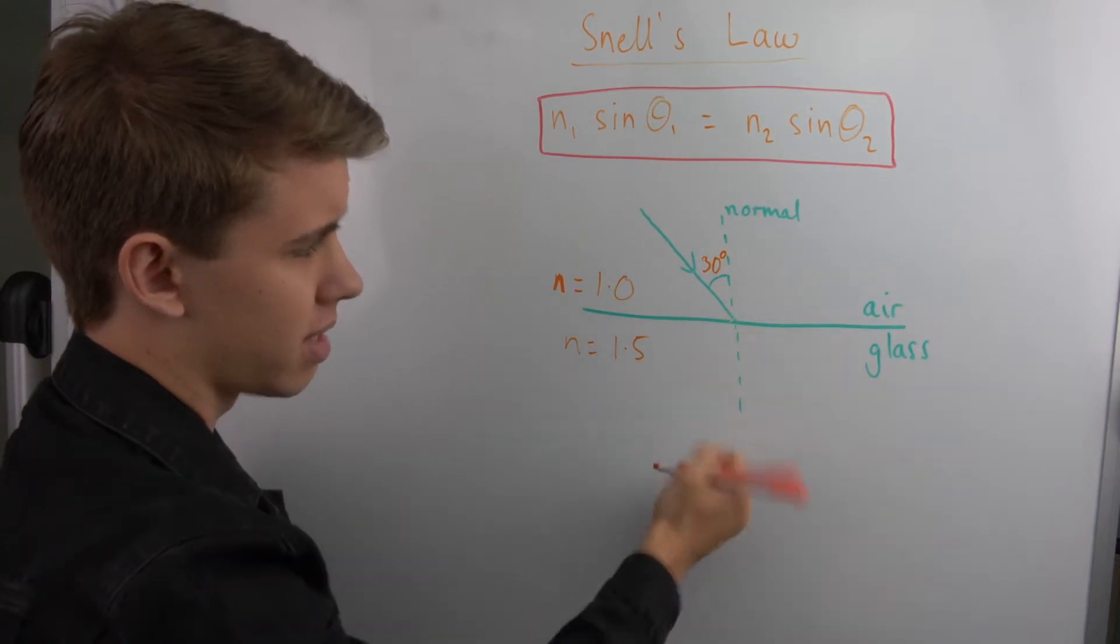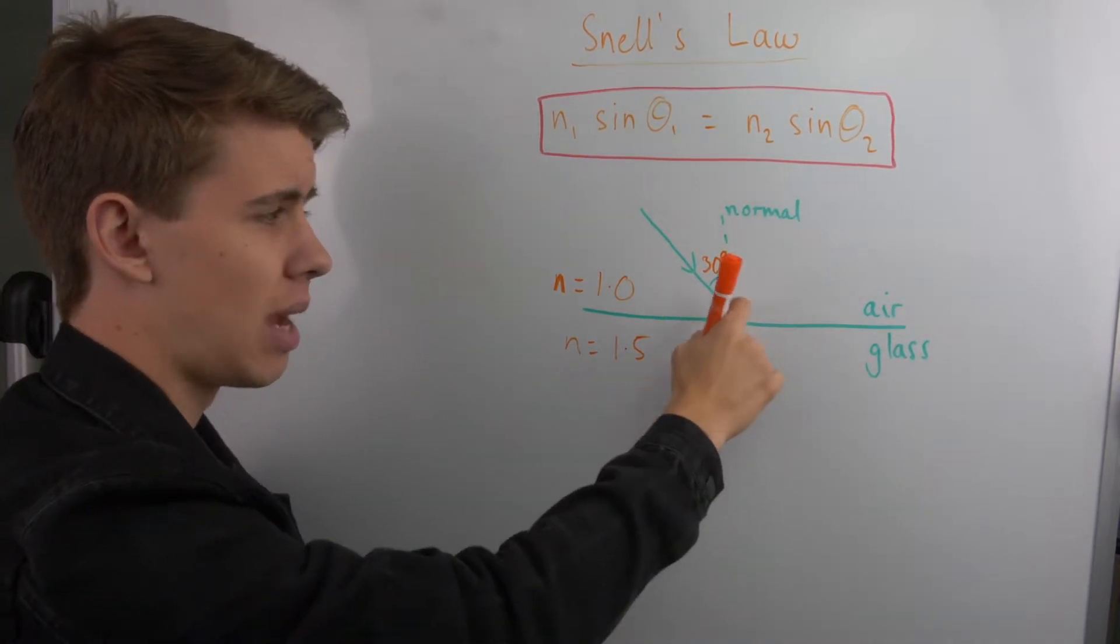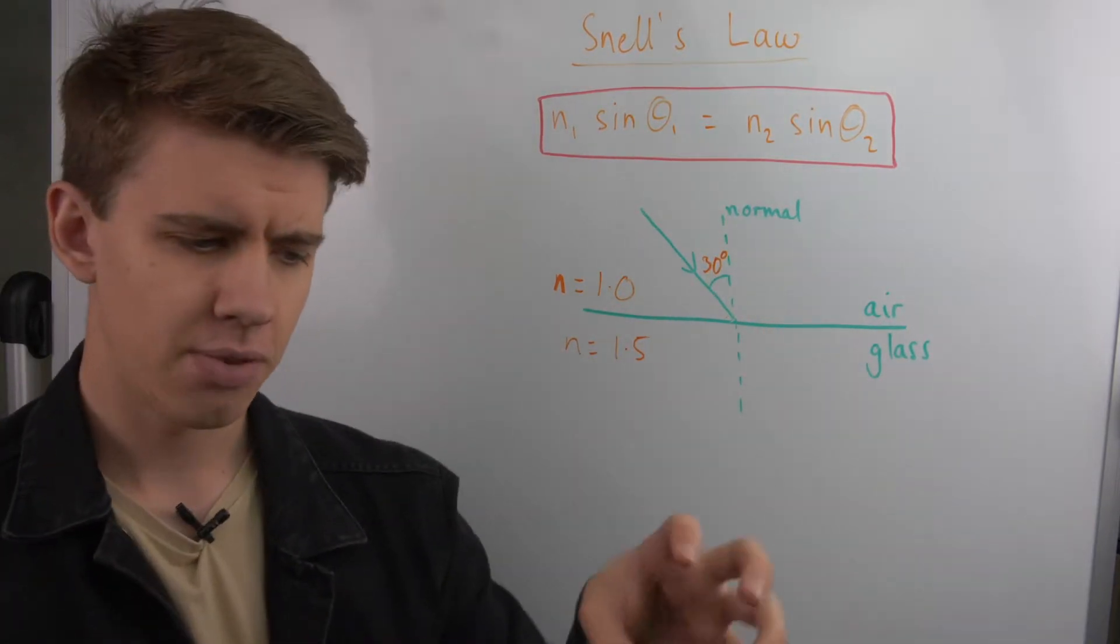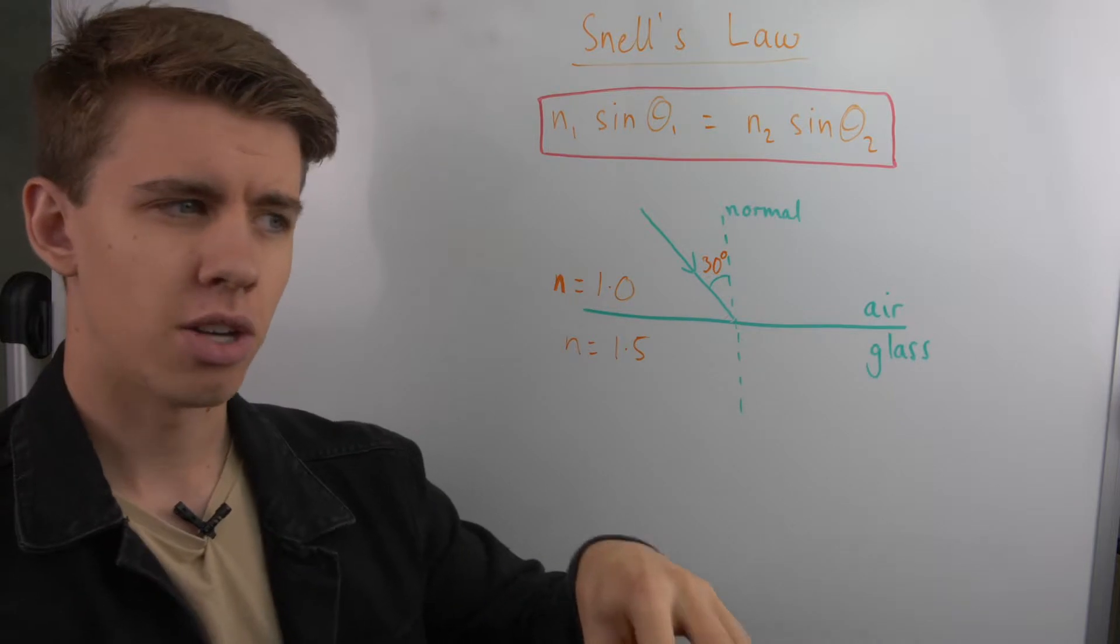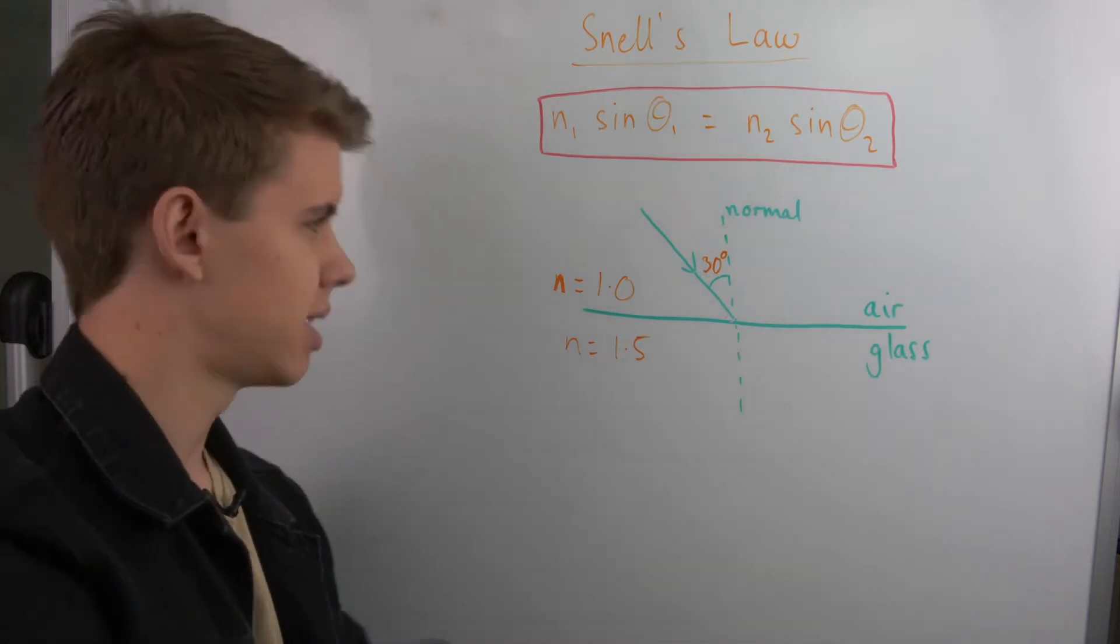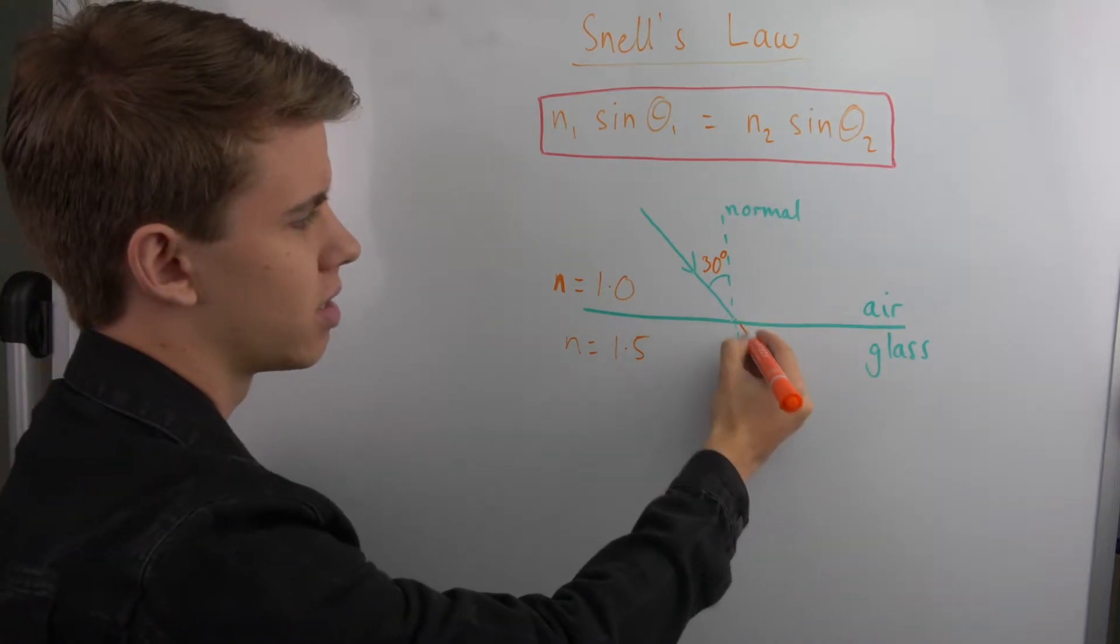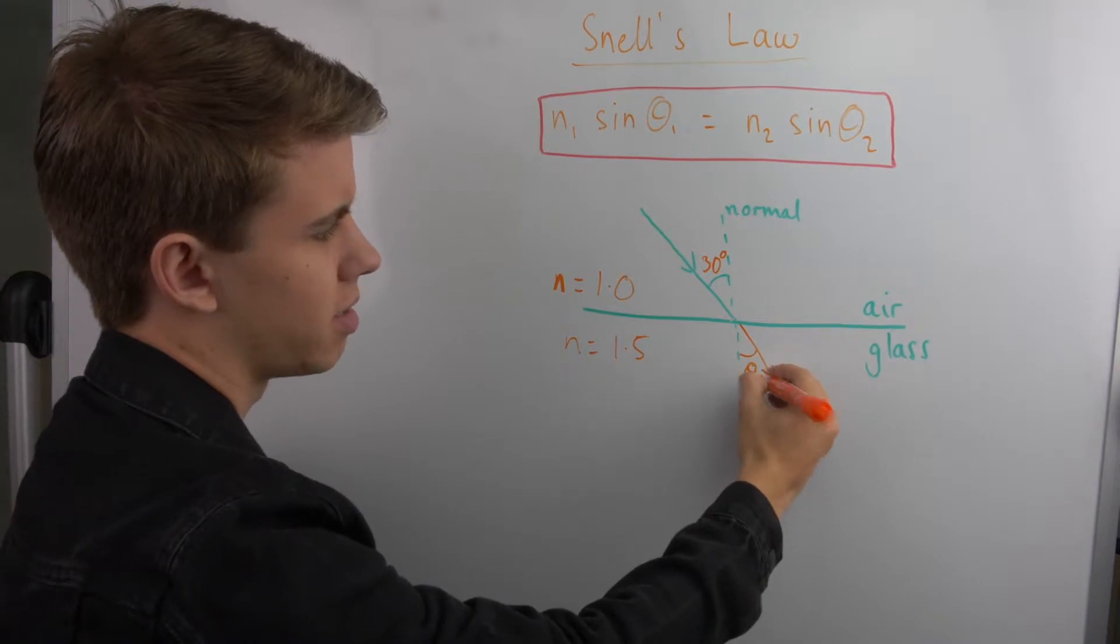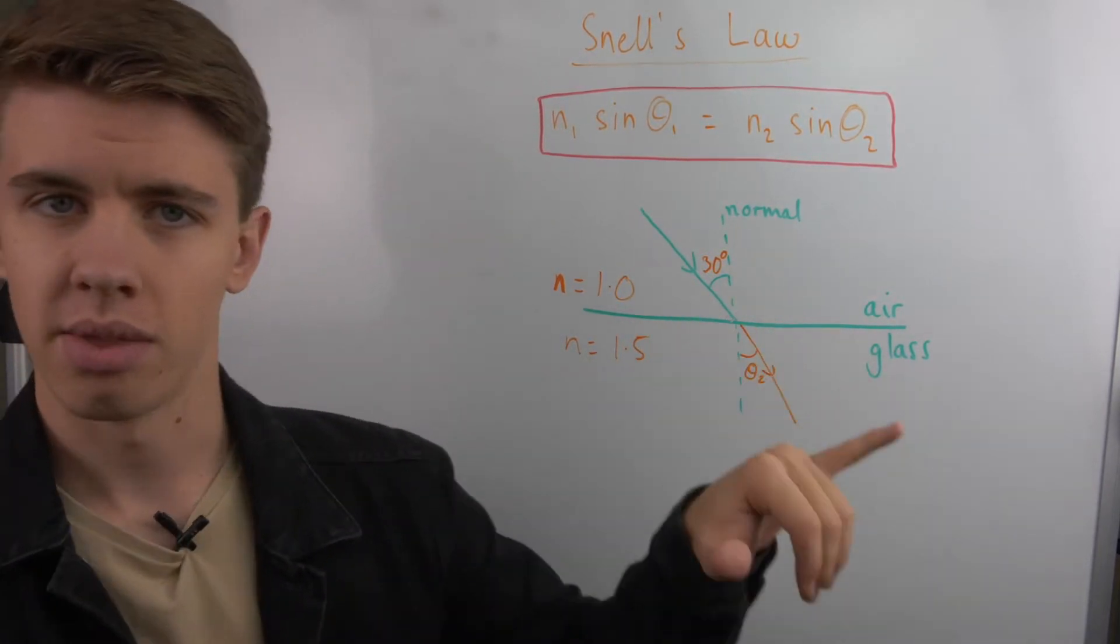When the wave slows down it changes direction, and if you're going from a less dense to a more dense medium your light will refract towards your normal. That's because the rays of light on this side will hit this side first and they will begin to slow down while your rays on the other side will continue to speed up. It's kind of like if you had one tire in a car stuck in mud while the other runs were on tarmac, you would twist in that direction.